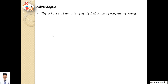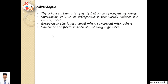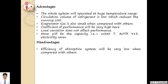Advantages: The whole system operates at a huge temperature range. Circulation volume of refrigerant is low, which reduces the running cost. Evaporator size is also small. Coefficient of performance will be very high. Load variation does not affect performance. More capacity — up to 1000 tons of refrigeration — and 91% electricity is saved as it works on waste heat energy. Wherever waste heat energy is available we can run the vapor absorption refrigeration system.